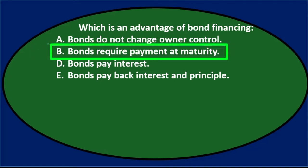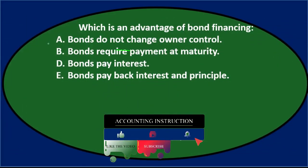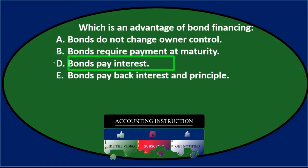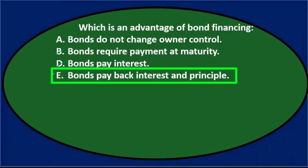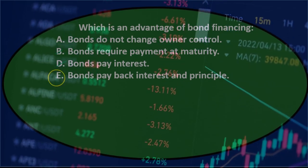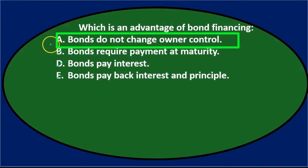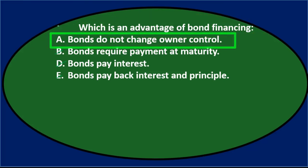Option B says bonds require payment at maturity — that's true but it's not an advantage. Stocks wouldn't require that, but you'd have to give up control. Option D says bonds pay interest — also true but a disadvantage, not an advantage. Option E says bonds pay back interest and principal — again not an advantage. So the answer is A: bonds do not change owner control.